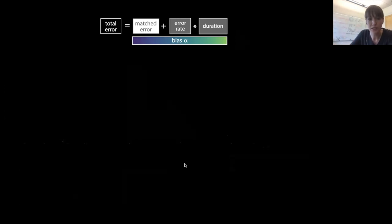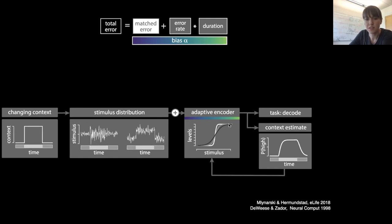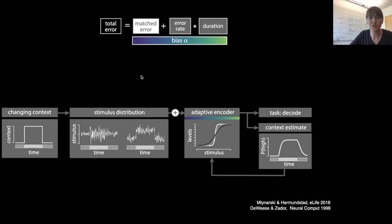The specific scenario we consider has the context switching over time between a low and a high state, parameterizing either the variance or the mean of a Gaussian stimulus distribution. At any point in time, a single stimulus from one of these distributions is encoded through an adaptive encoder — a saturating nonlinearity that maps an incoming stimulus onto a discrete response level. This response level is used to do two things: decode an estimate of the stimulus, and update an estimate of the underlying context. We design a family of adaptive codes that balance these different sources of error.